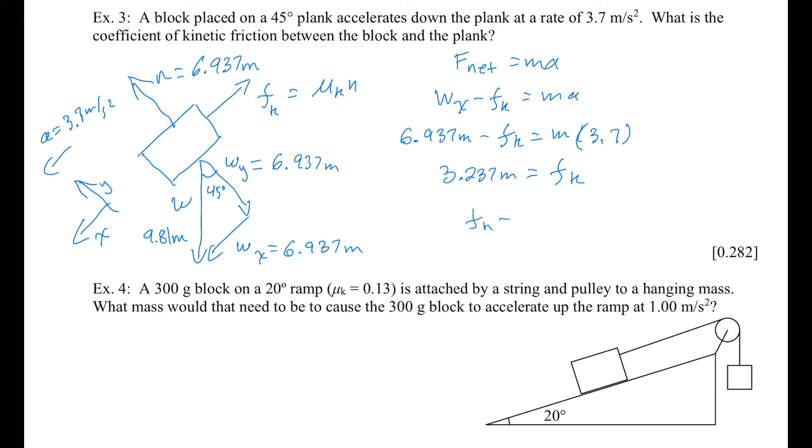Now remember f_k equals mu_k times n. And we know what f_k is now sort of, it's 3.237m equals mu_k times n. And we know the normal force is 6.937m.